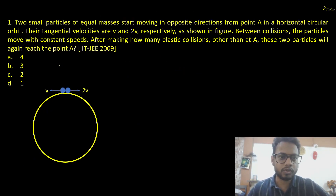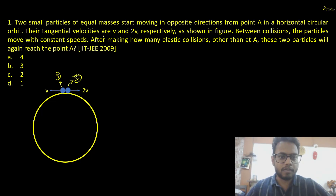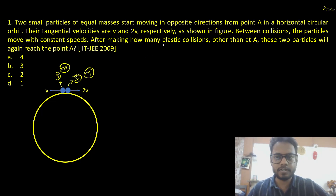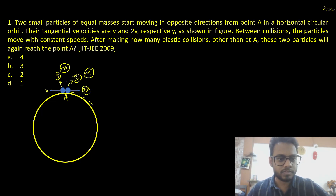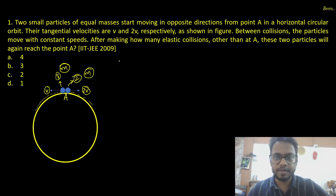The question involves two small particles — particle 1 and particle 2 — of equal mass M, starting from point A and moving in opposite directions in a horizontal circular orbit. The second mass moves with initial tangential velocity 2V at point A, and the first particle moves in the left direction with initial velocity V. Their tangential velocities V and 2V respectively are shown in the figure.